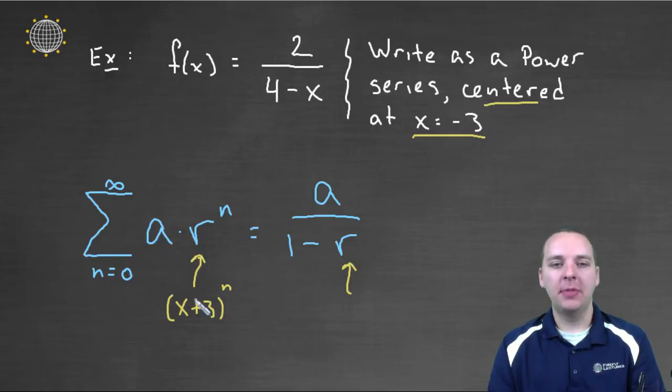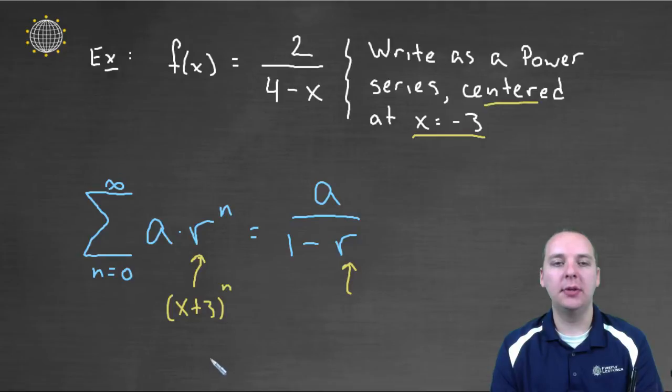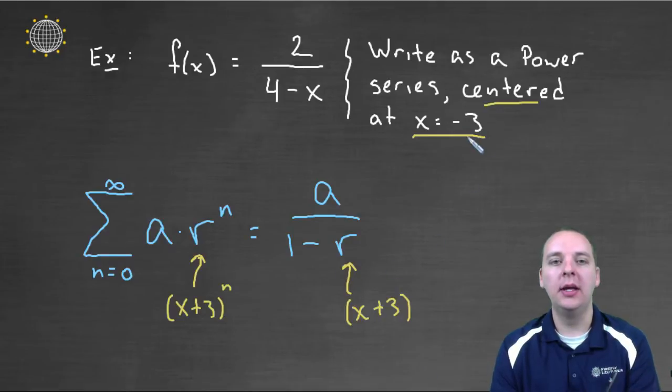that's your r to the n and you would have to have that so that it's centered at negative 3 because it's x minus c or x minus negative 3 that makes x plus 3. And what that implies is that over here on the right hand side, this r would have to be x plus 3, no excuses. It has to be x plus 3, that's the only way this could be centered at negative 3.